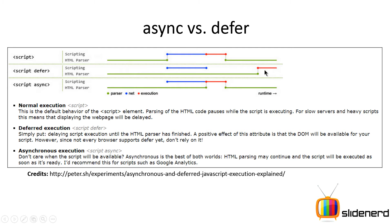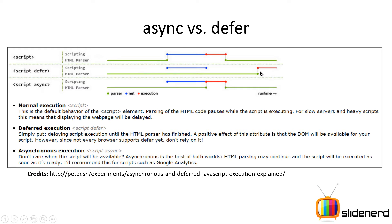Now let's talk about defer. Defer means downloading in parallel while HTML parsing happens, but executing after all the HTML parsing is complete. The HTML parser is running, and somewhere in between the external script gets downloaded, then executed at the end. Async is somewhat a mixture of both — the script gets downloaded somewhere in between and also gets executed somewhere in between when the parser feels it's ready for executing JavaScript. Asynchronous is the best of both worlds: HTML parsing may continue and the script will be executed as soon as it's ready. The clear difference is that defer will always execute after HTML parsing is complete, but async has no particular order.